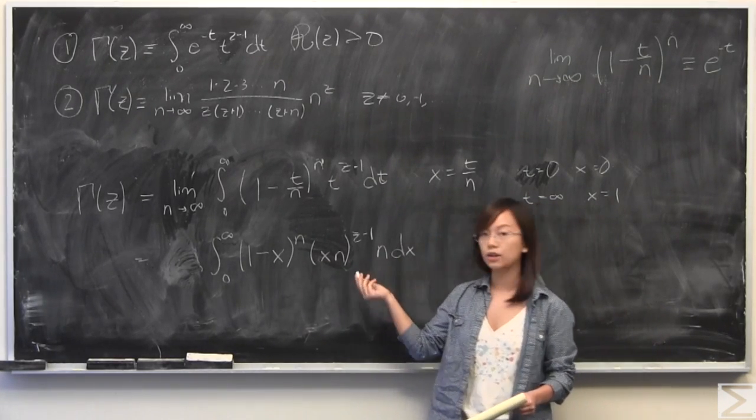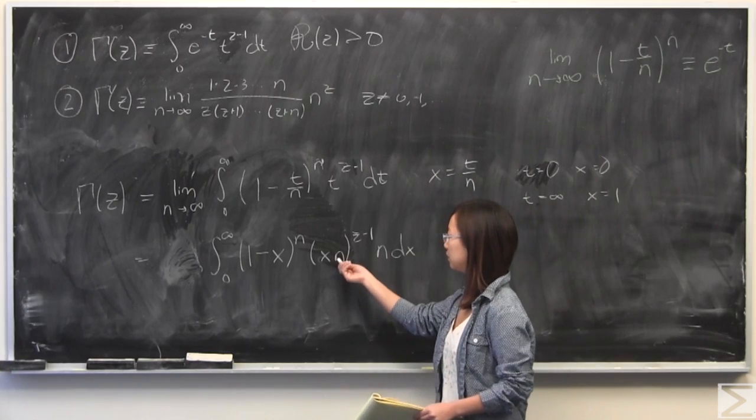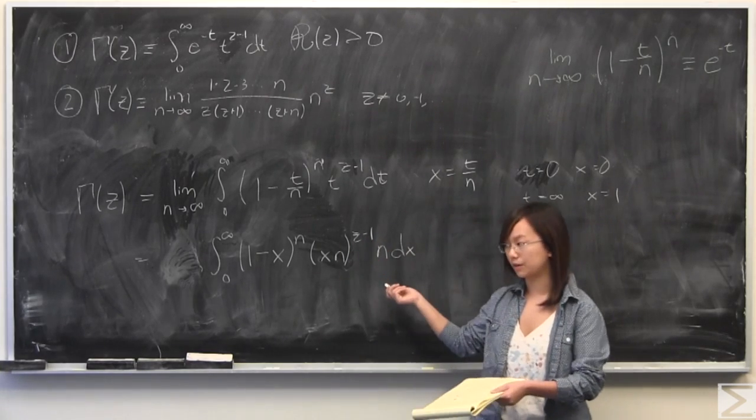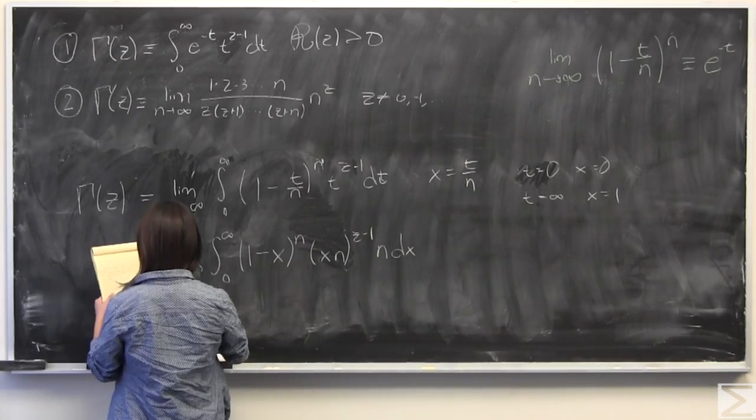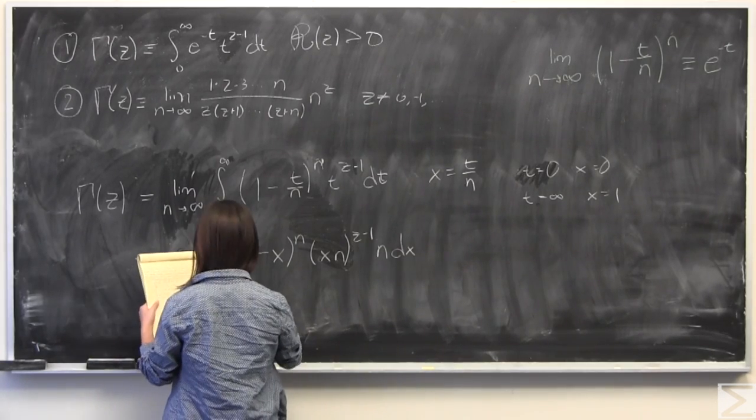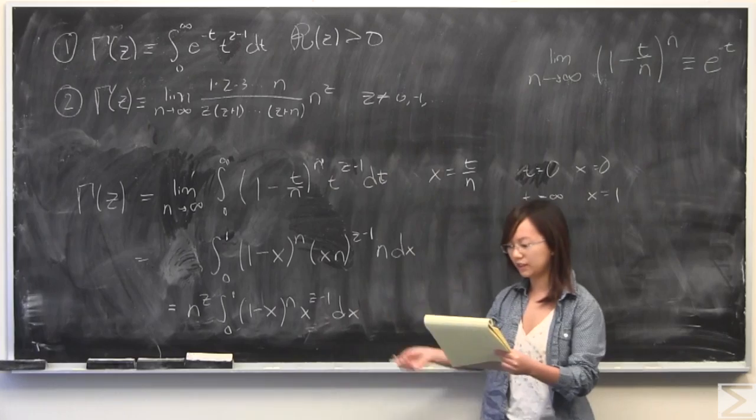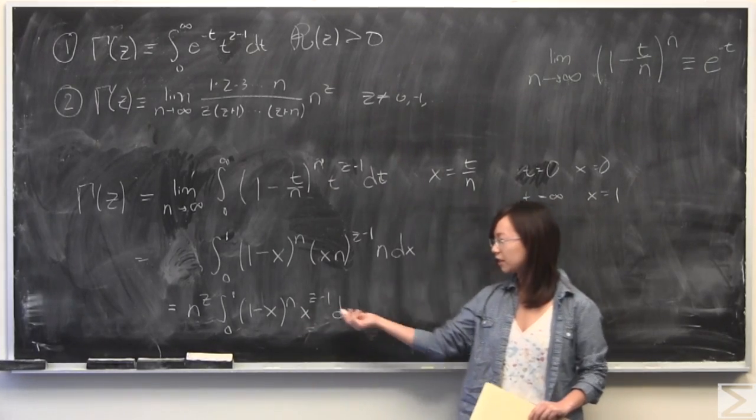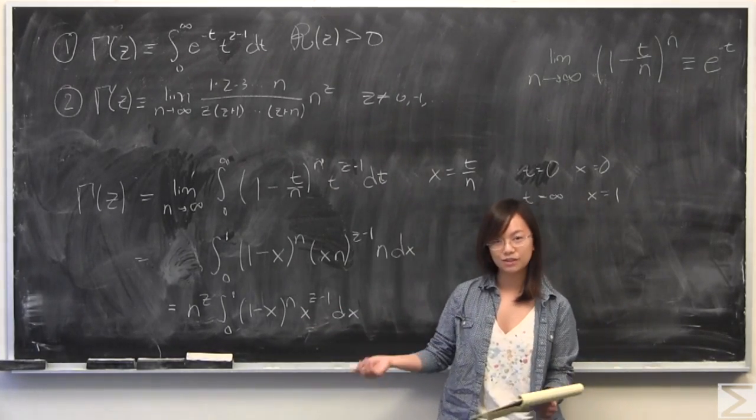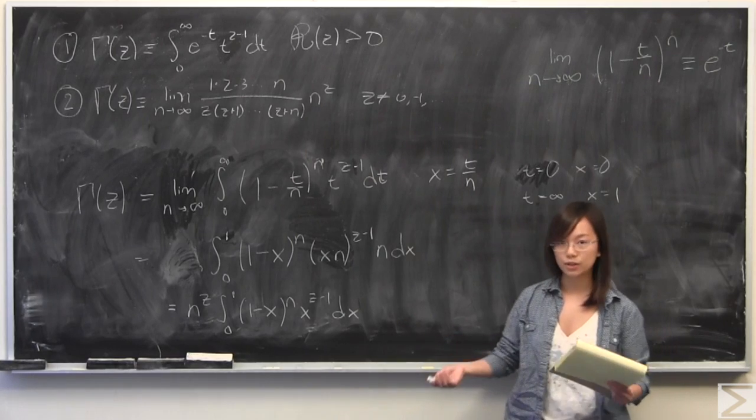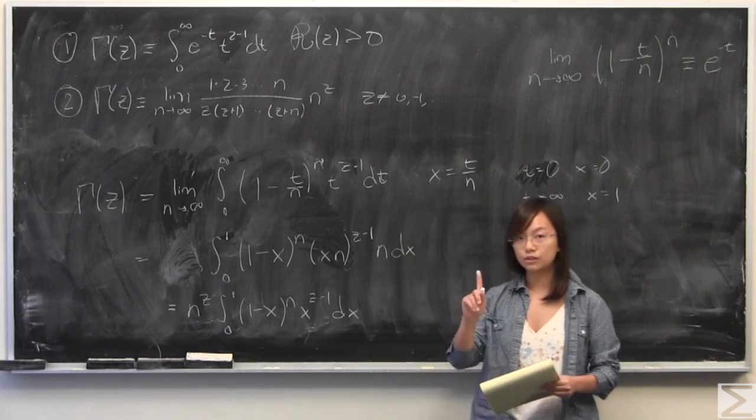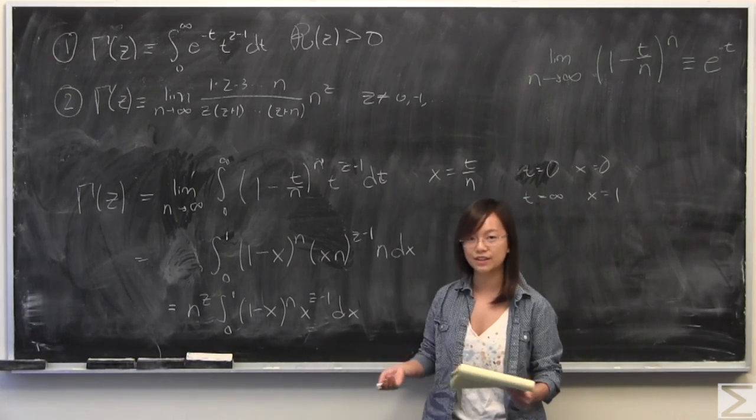I'm going to pull out n to the power of z from this because we have n to the power of z minus 1 and n to the power of 1. Apologies for the typo. I've changed that to the 1 like it should be. So from here, we have this. And the cool thing we do now is we do integration by parts. So I'll do 1 and then it'll be very clear what the pattern is and what that's going to turn into.